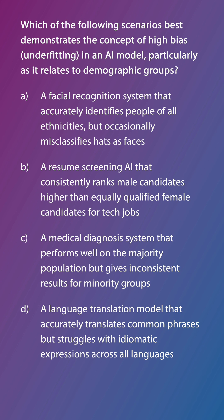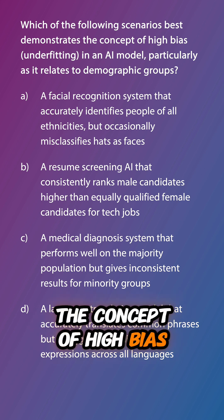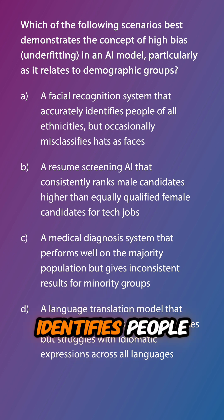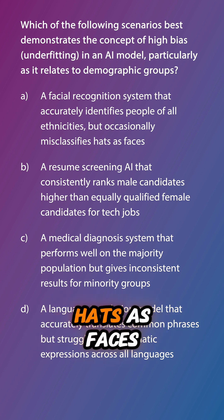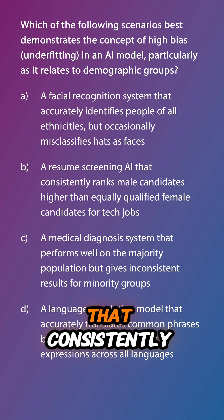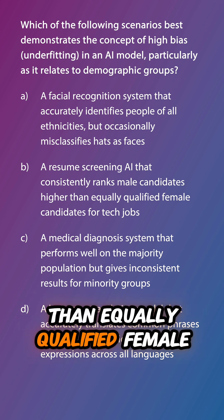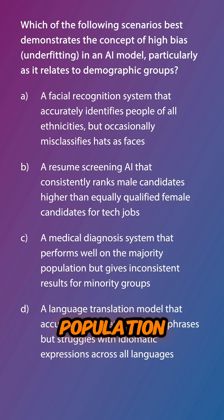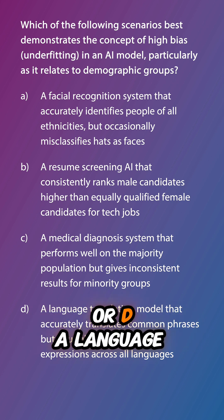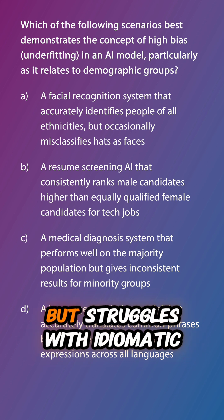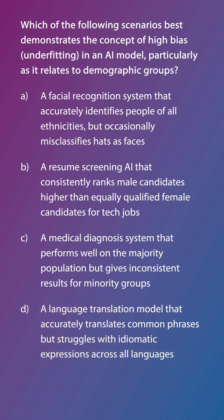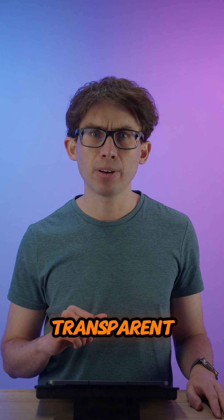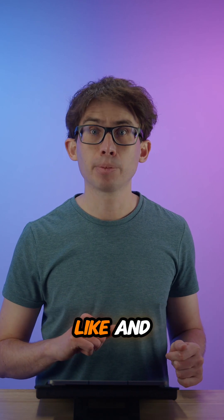Let's do a review question. Which of the following scenarios best demonstrates the concept of high bias underfitting in an AI model, particularly as it relates to demographic groups? A: A facial recognition system that accurately identifies people of all ethnicities but occasionally misclassifies hats as faces. B: A resume screening AI that consistently ranks male candidates higher than equally qualified female candidates for tech jobs. C: A medical diagnosis system that performs well on the majority population but gives inconsistent results for minority groups. Or D: A language translation model that accurately translates common phrases but struggles with idiomatic expressions across all languages. We'll review this in the next episode, where we'll finish our coverage of responsible AI development looking at the importance of transparent and explainable models. Don't forget to follow, like, and subscribe, and I'll see you in the next video.